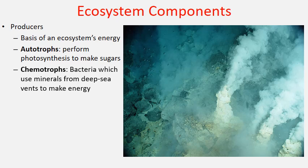A lesser-known example of a producer are the chemotrophs — bacteria that feed upon minerals being released from hydrothermal vents, like the ones you see in this picture. You can see the smoke billowing out of the cracks. In that smoke are minerals that bacteria feed upon, which then form the basis of their ecosystems. But most of the time when we say producers, we're referring to the photosynthetic autotrophs like plants.